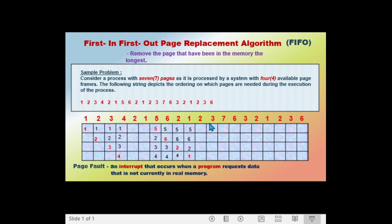The next page called is page 2. The frames contain pages 5, 6, 2, and 1. Page 2 is still in the frame, so no page fault occurs. The next page called is page 3. The frames contain pages 5, 6, 2, and 1. Page 3 is not in the frame, causing one page fault. From among those pages, page 5 has been in memory the longest, so page 5 is swapped out and page 3 is swapped in.